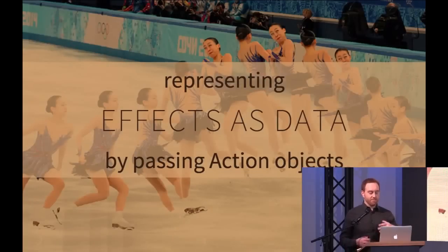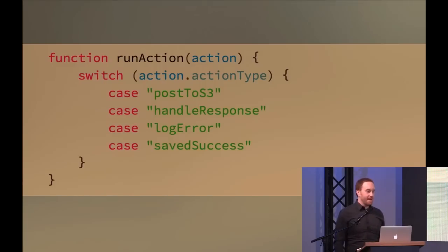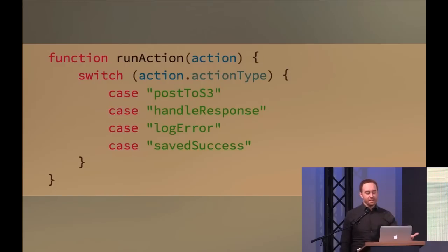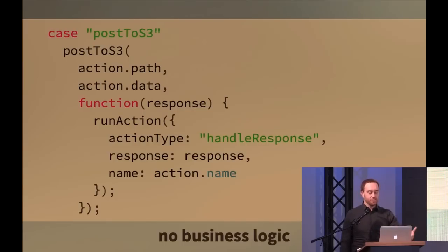This is the idea of representing effects as data — we're just passing action objects instead of doing the thing immediately. But of course we can't just have functions that return stuff and do nothing with it, or we'd have a very testable program that does nothing. So we make a third function `runAction`. It takes the action, does a switch statement on `action.actionType`, and depending on which of the four action types — postS3, handleResponse, logError, saveSuccess — it takes the appropriate action and actually runs the effect.